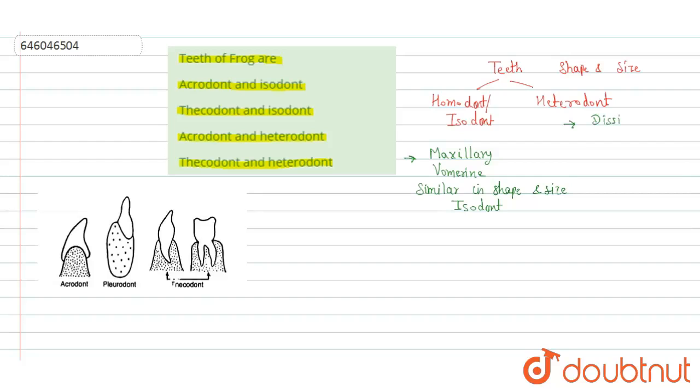Now another important term is on the basis of the mode of attachment. On the basis of mode of attachment, the frogs have acrodont teeth. Acrodont - and what does this mean?